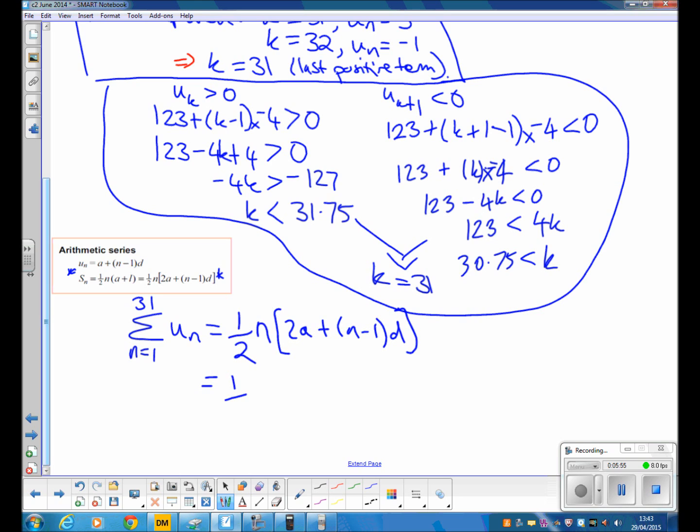So the sum's going to be a half times, we're going from 1 to 31, so there's 31 terms, 2 times the first term which is 123, plus, you're doing 31 terms, and the common difference is minus 4. You then work all that out, and you get 1,953.